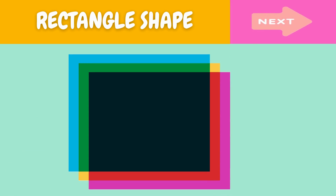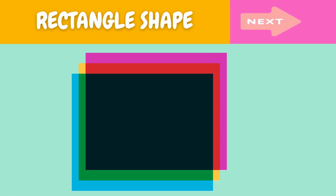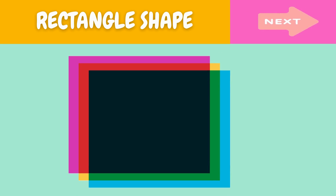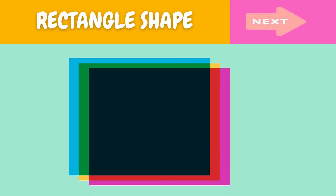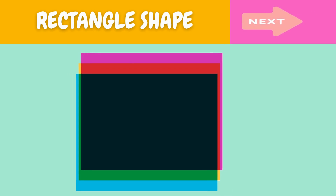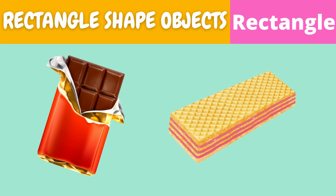This is a rectangle. What is this? This is a rectangle. Here are some examples of rectangle shaped objects.